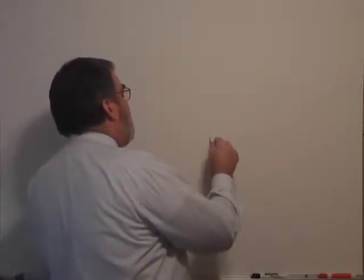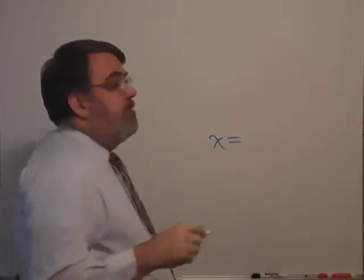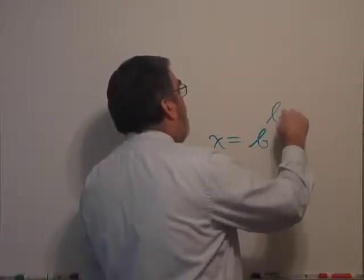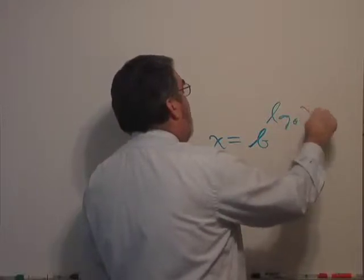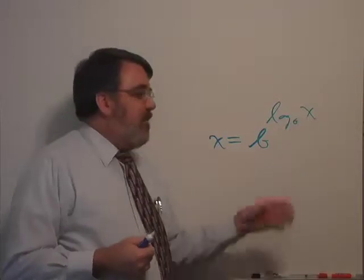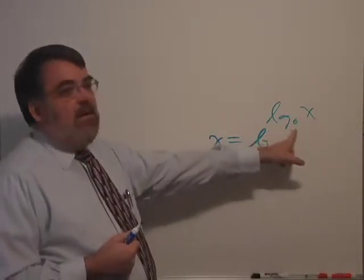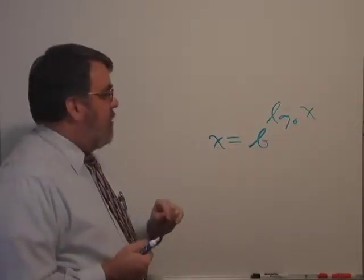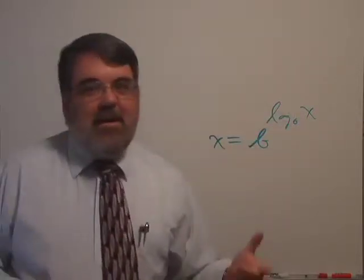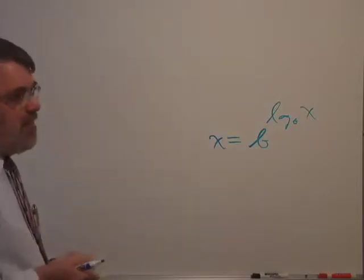What I'm going to take advantage of is something I showed you in the last video. x could be rewritten as b raised to the log base b of x. So this is the formulation that shows that the exponential function cancels the logarithm function. They literally cancel. But it's kind of a funny way of writing x, but it's going to come in handy here in a moment.